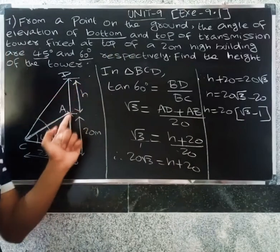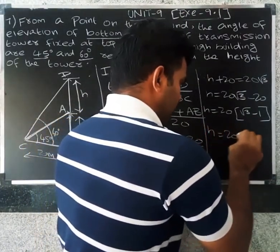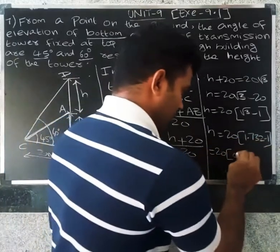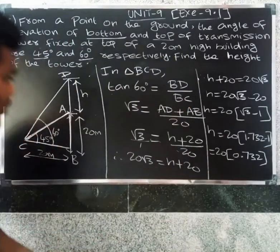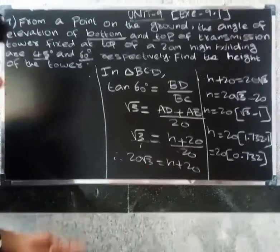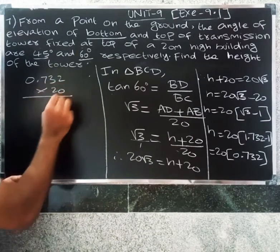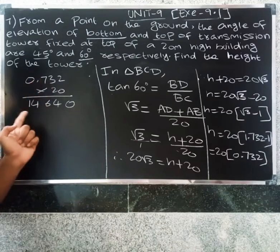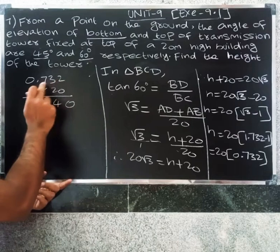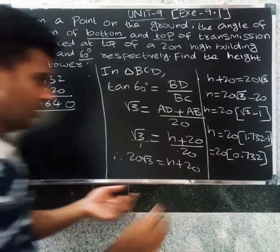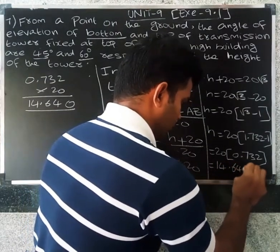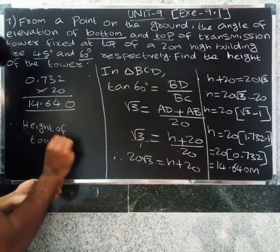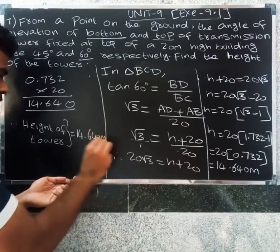Therefore, height of tower equals 20 times root 3 minus 1 meters. Substituting root 3 equals 1.732: height equals 20 into 0.732, which equals 14.640 meters. Therefore, height of tower is equal to 14.640 meters. Thank you.